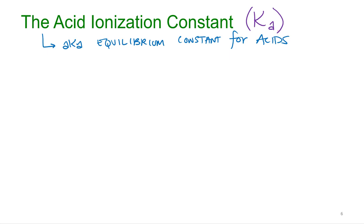The equilibrium constant, acid ionization constant, whatever you want to call it, it's going to be the same thing. It's going to be the concentration of the products over the concentration of the reactants.